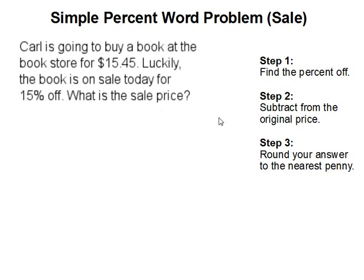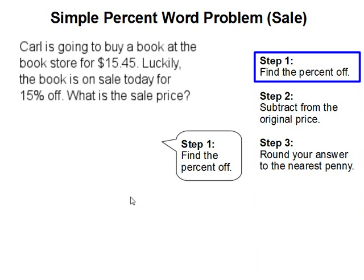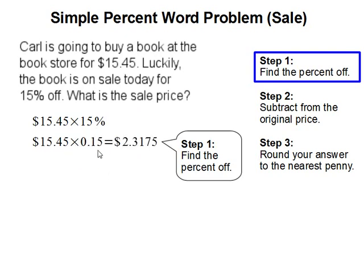In order to find the sale price, the first step is to find the percent off. That is to multiply the original price, $15.45, by 15% as a decimal, which is 0.15. Multiplying this will get us 2.3175.